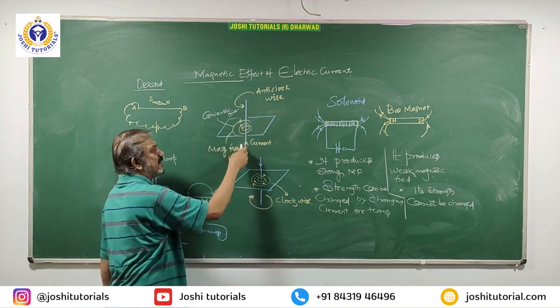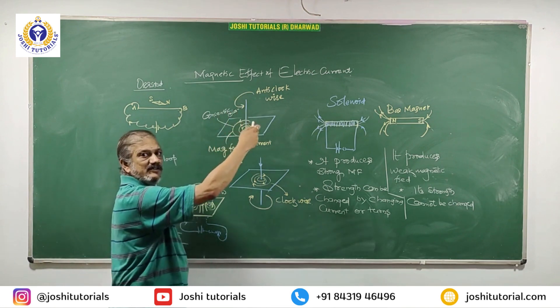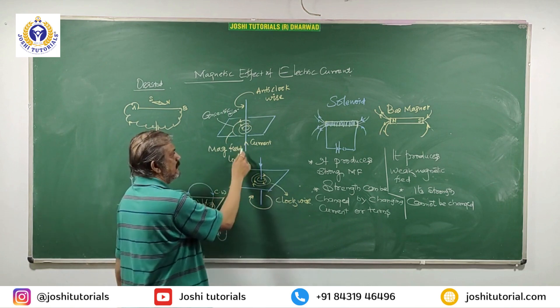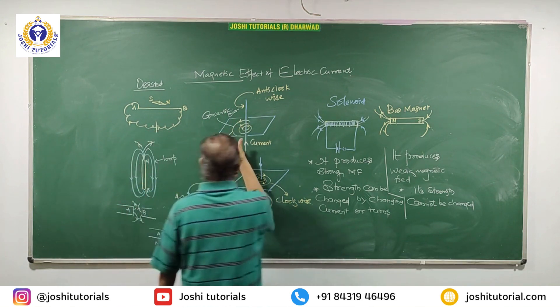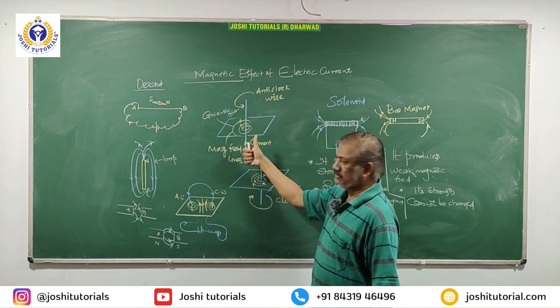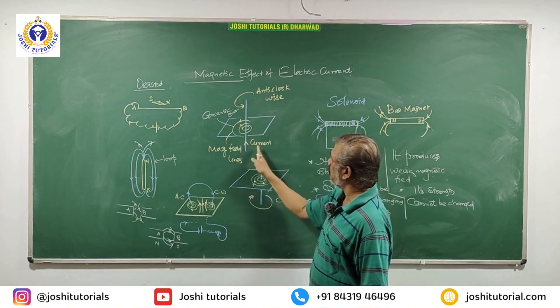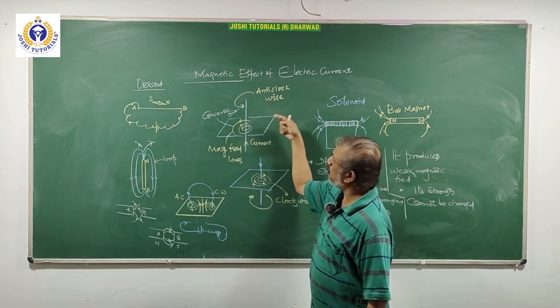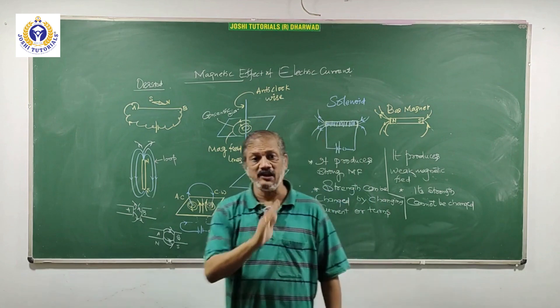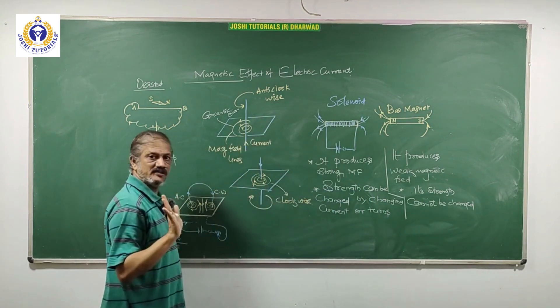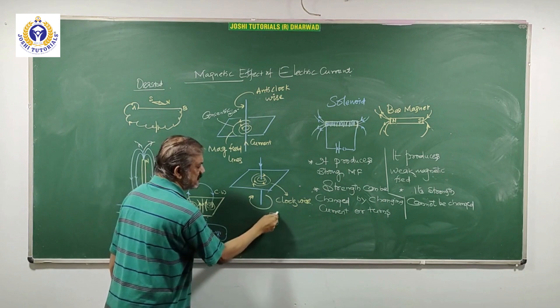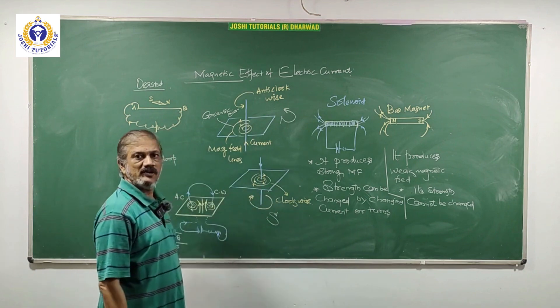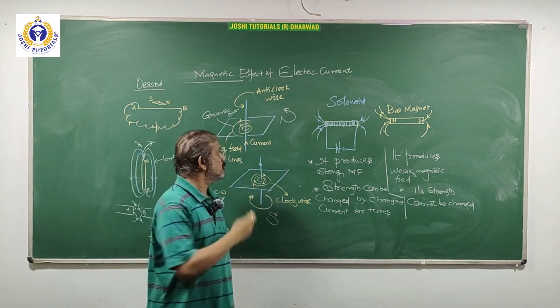If you take a straight current-carrying conductor or coil, when you pass current like this, it is the right hand thumb rule. Thumb shows the direction of current. Remaining fingers are in anti-clockwise direction. Out of the paper is anti-clockwise, into the paper is clockwise. Clockwise will be South Pole. Anti-clockwise will be North Pole. In this way, you can tell North and South.